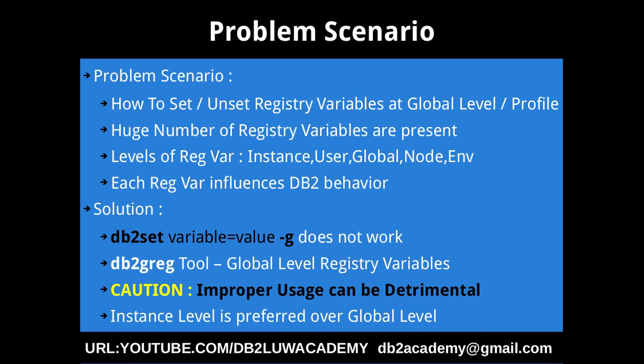So it's like: hyphen I means instance level, hyphen U means user level, hyphen G means global level. But for some reason, I think from 9.7, the global level registry variable — if you use the DB2 set command and the option hyphen G — it does not work. You have to use a new tool DB2GREG to set or unset or change values for the global level registry variables. And a word of caution: improper usage can be detrimental to your system or instance.